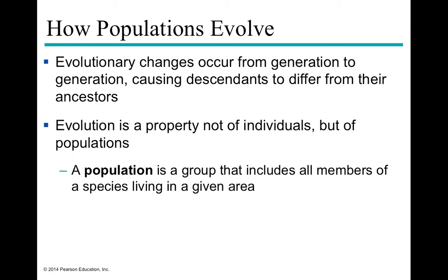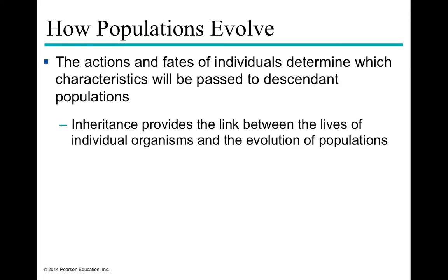A population as a whole is able to evolve simply because there is variability within the population and there are individuals within that population able to rise and meet whatever environmental challenges arise. This leads to changes in the phenotype — the expression of certain alleles in the population over time. Evolution is a property of a population, not an individual, and a population is a group of all members of a particular species that live in a given area and are able to interbreed.